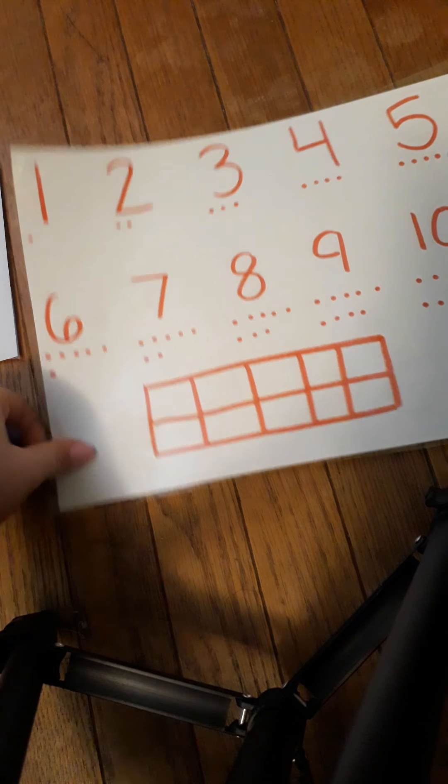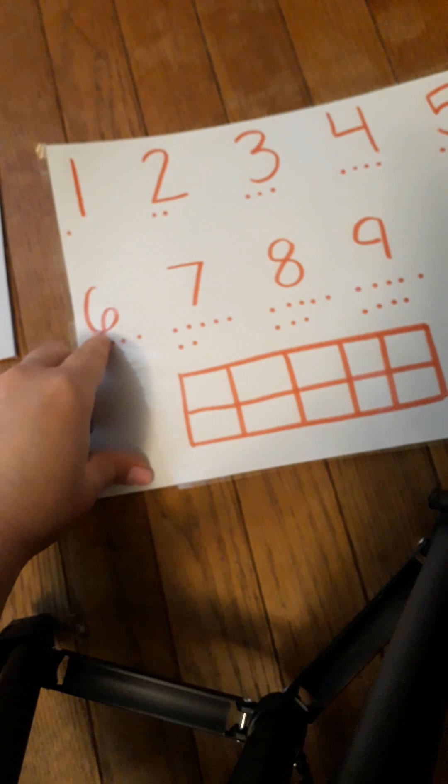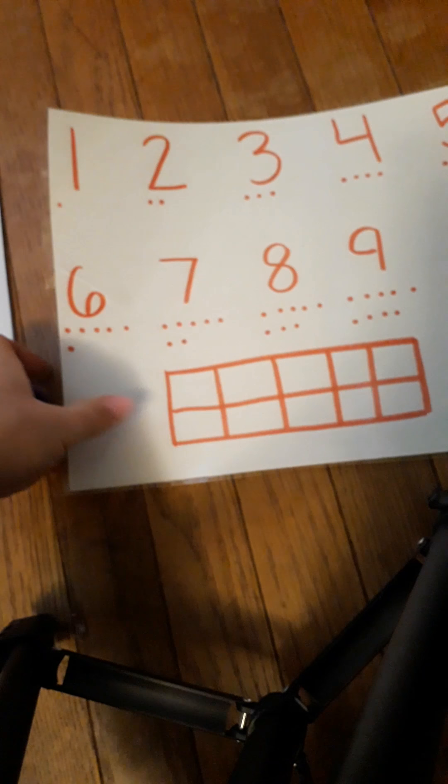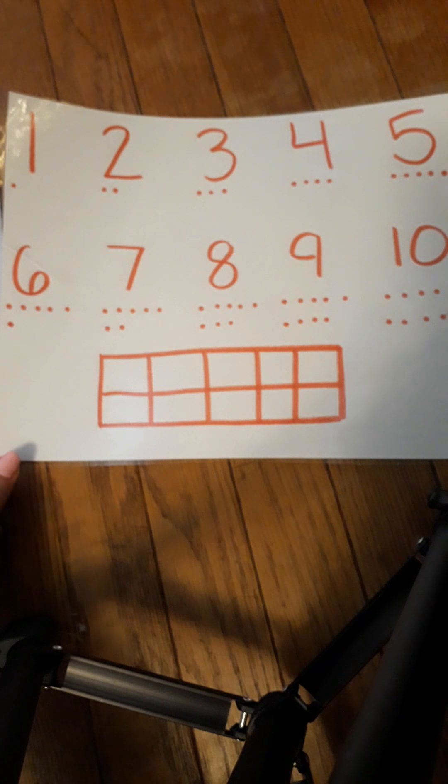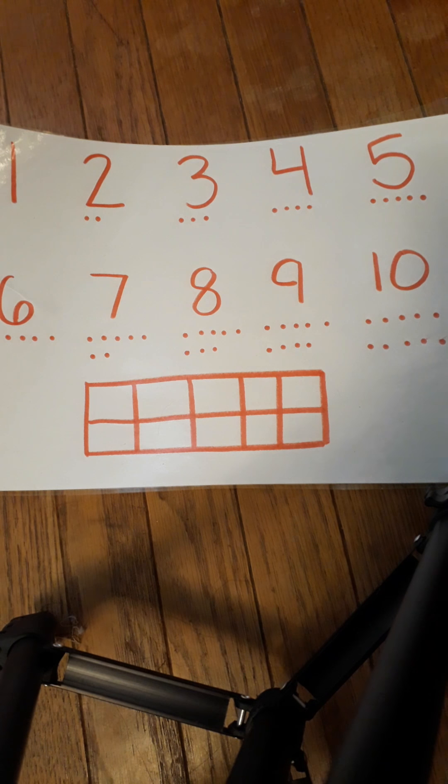But you can also flip it over onto your back and make a big six too. And then you can try this for using smaller, skinnier snakes, more like you would do if you were writing it with a pencil. Go ahead and give that a try!